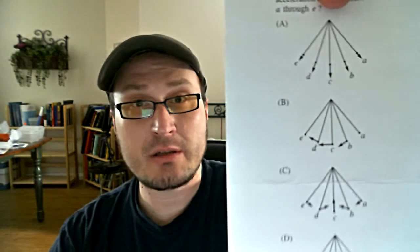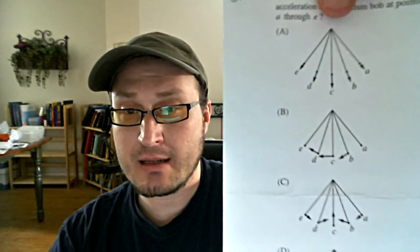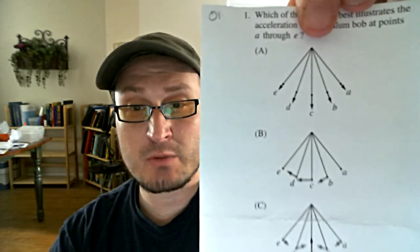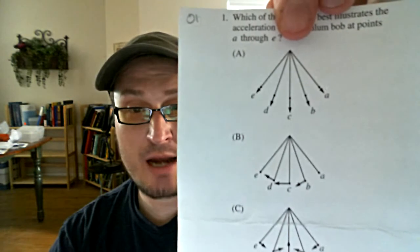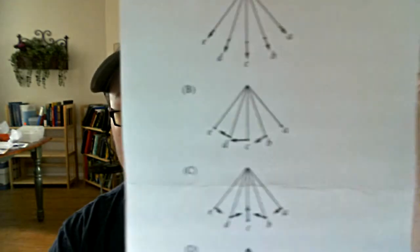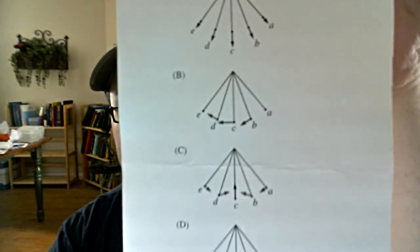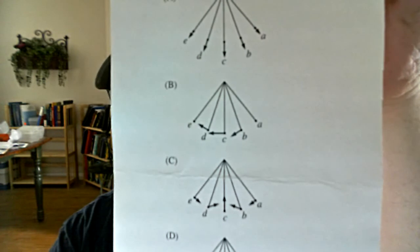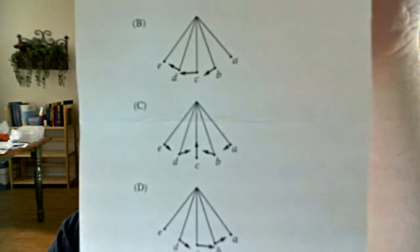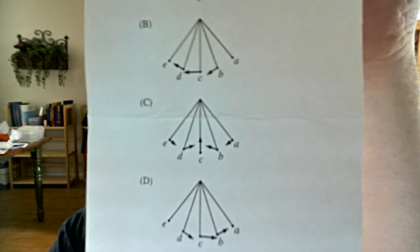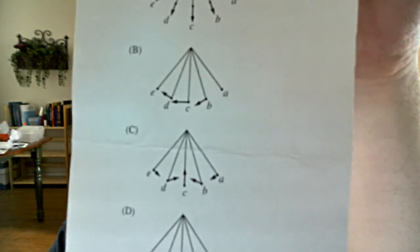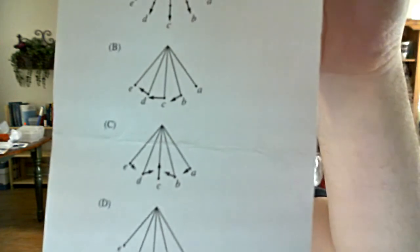There are two forces adding vectorially to give the net force: the tension in the pendulum and the weight of the bob acting downward. Looking at point E in answer A — could the weight pointing straight down add with the tension pointing up along the wire and produce a vector going off in that direction? No, clearly not. Answer B — would the tension go to zero? No, the tension would not go to zero at that point. Answer C is more interesting: if we add the weight going down and the tension going up along the wire, we could produce a net force and therefore a net acceleration that looks like point E. So I'm knocking out A and B and keeping C.